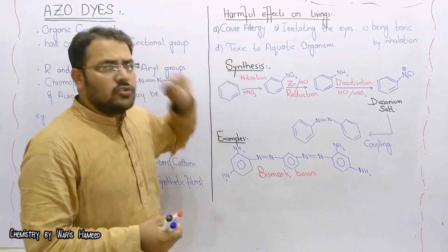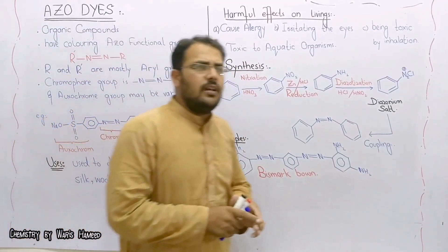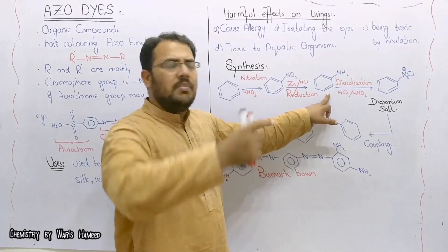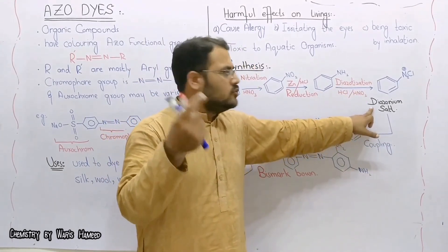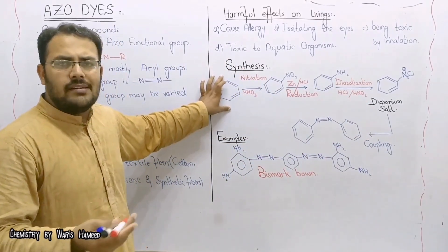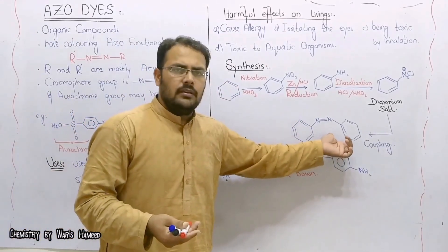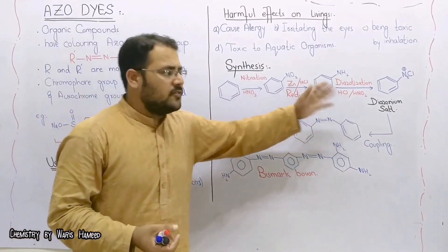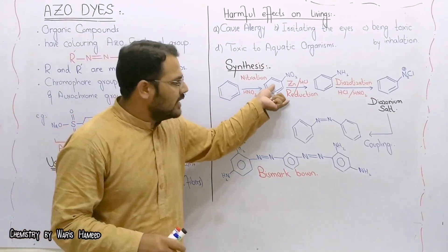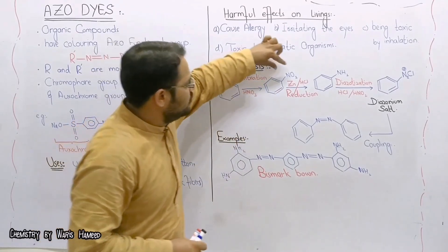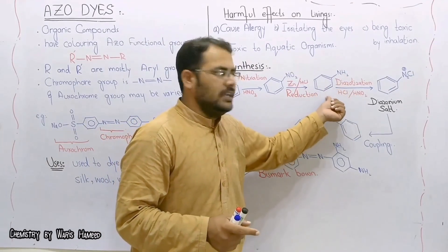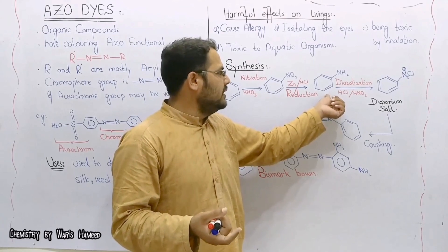Azo dyes can be synthesized from an amine by diazotization, or by forming a diazonium salt. If you have benzene, you can use it as a raw material and form any azo dye by performing these steps: first, we do nitration of benzene to obtain nitrobenzene, then we do reduction of the nitro group, which converts it into an amine group — it is now aniline, or aminobenzene.